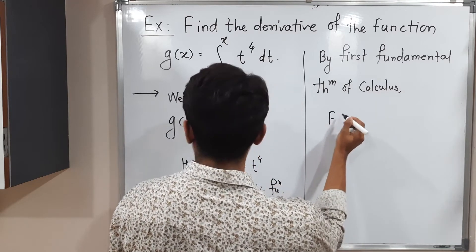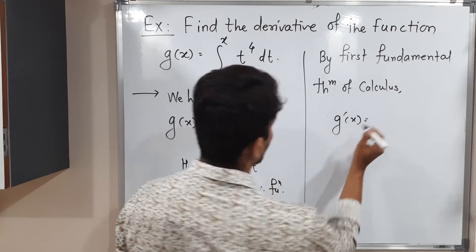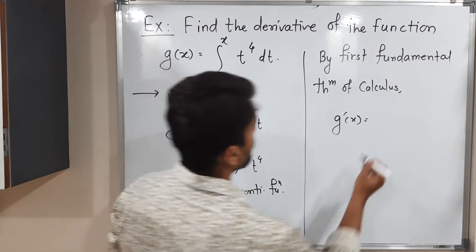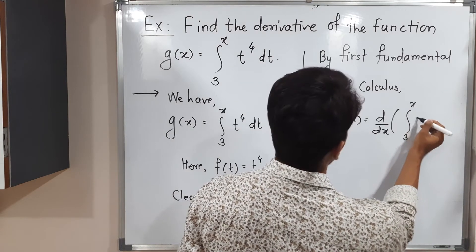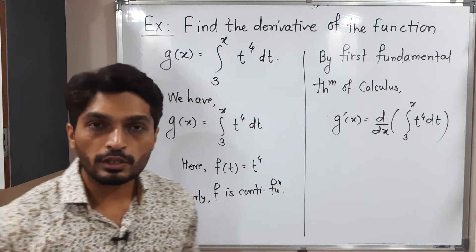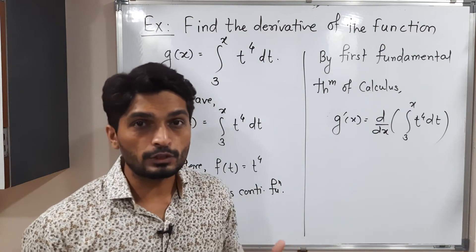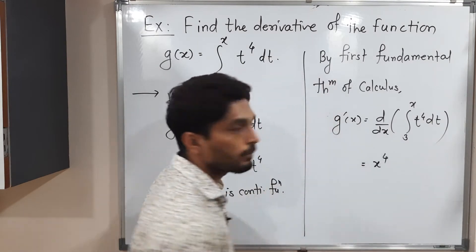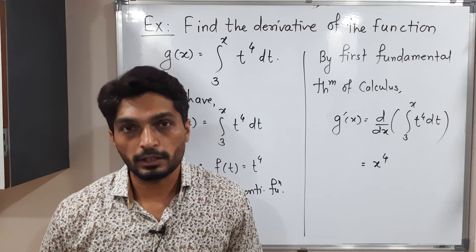By the first fundamental theorem of calculus, we have g dash of x, which is the derivative. The technique of finding its derivative is very simple. We take the derivative of the integral from 3 to x of t raised to 4 dt. The integration and derivative cancel each other. We ignore the lower limit which is a constant, simply put in the upper limit, and we have the answer x raised to 4.